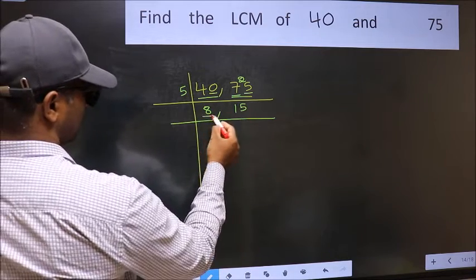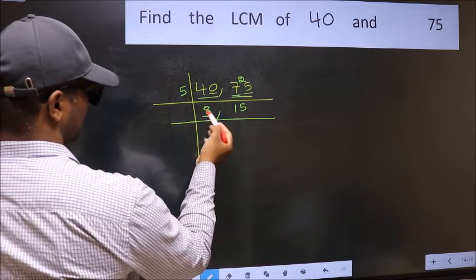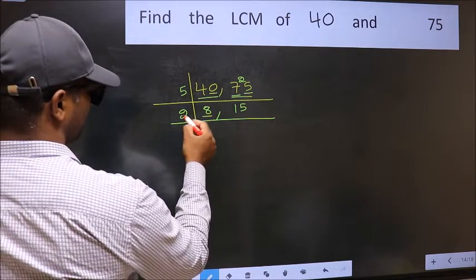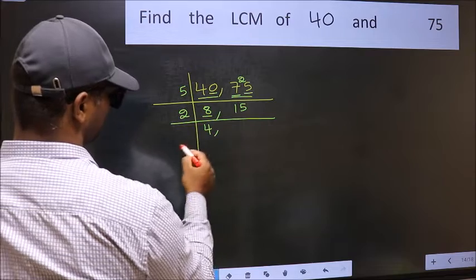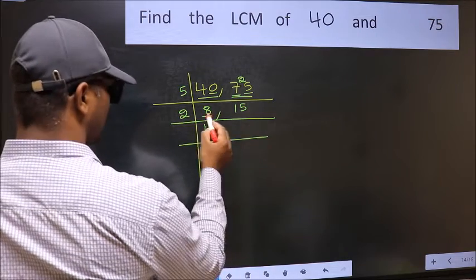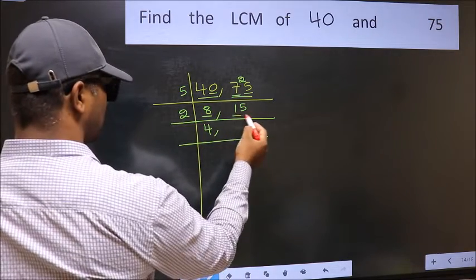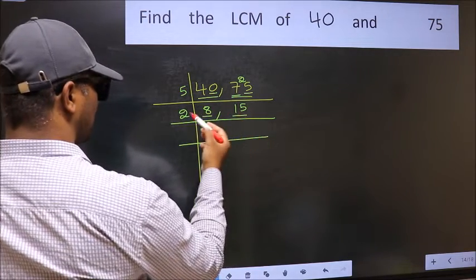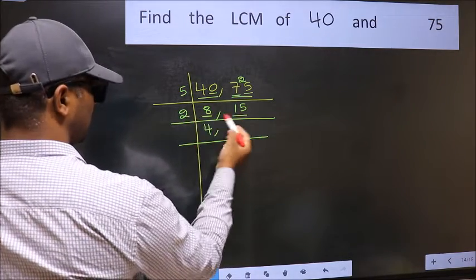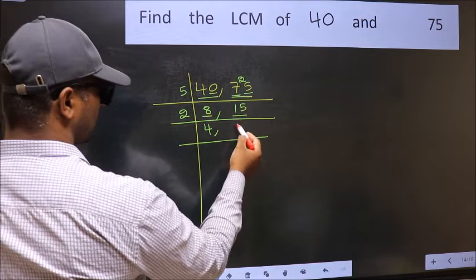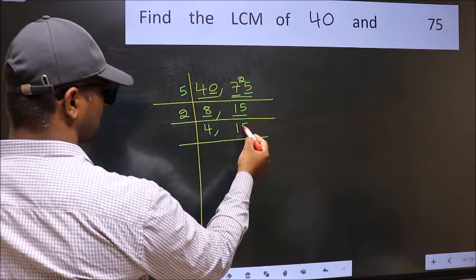Now here we have 8. 2 times 4 is 8. The other number is 15 — not divisible by 2, so you write it down as it is.